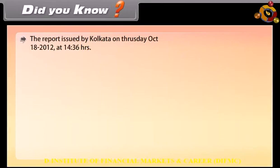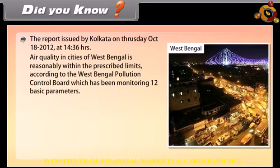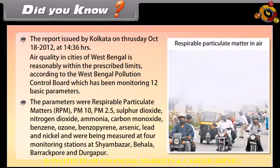Did you know? A report issued from Kolkata on Thursday, October 18, 2012 states that air quality in cities of West Bengal is reasonably within the prescribed limits according to the West Bengal Pollution Control Board, which has been monitoring 12 basic parameters. The parameters include respirable particulate matters (RPM), PM10, PM2.5, sulfur dioxide, nitrogen dioxide, ammonia, carbon monoxide, benzene, ozone, benzopyrene, arsenic, lead, and nickel, measured at four monitoring stations at Shyam Bazaar, Behala, Barrackpore, and Durgapur.